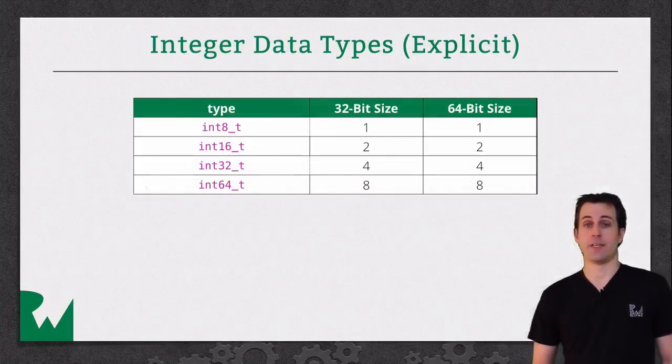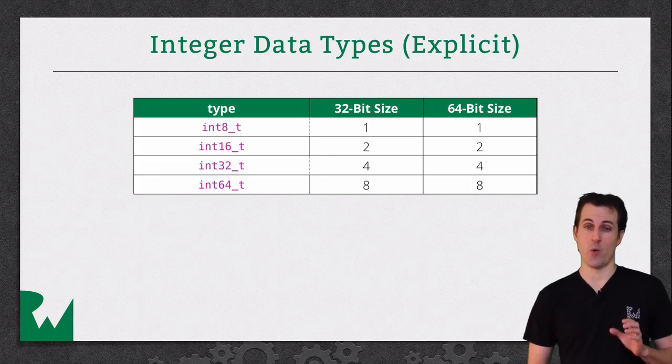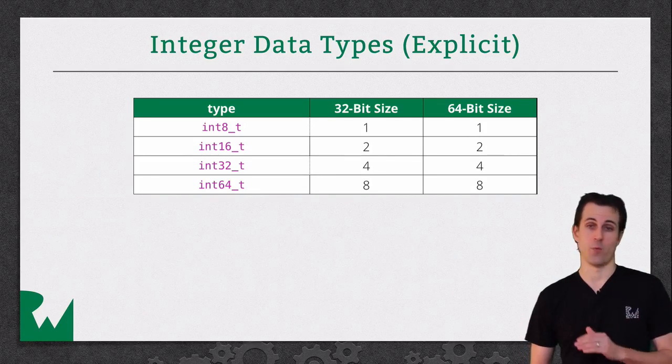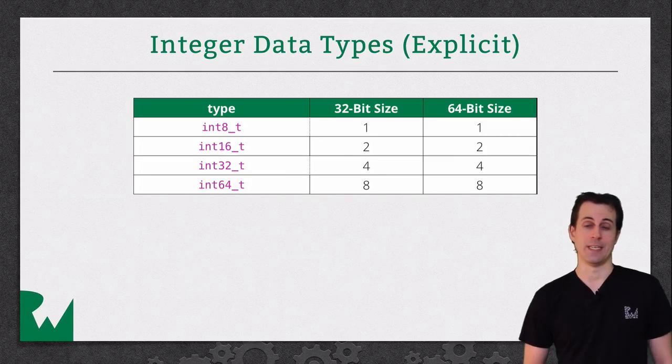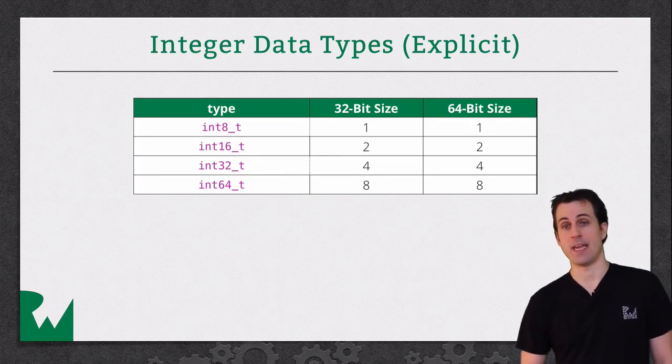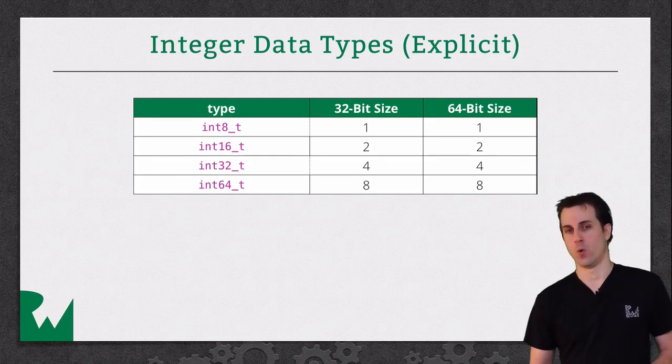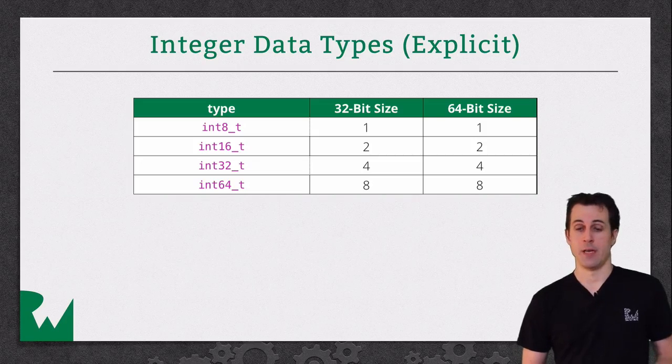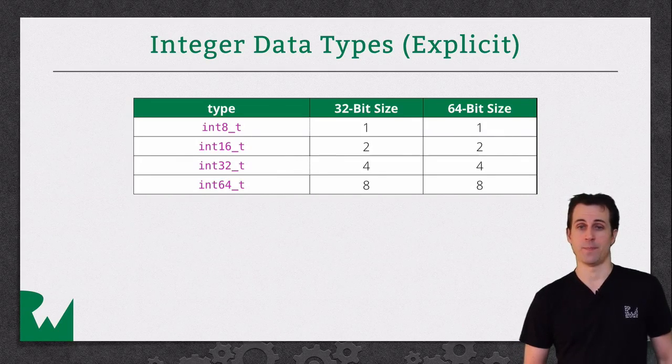The last data type you need to know about is explicit data types. This is the size to use if you want to guarantee how big the data type is, regardless of what architecture you're running on. For example, int8_t is always going to be 8 bits or 1 byte, regardless of whether you're running on 32-bit or 64-bit OS. There are similar data types for 2-byte, 4-byte, and 8-byte values.